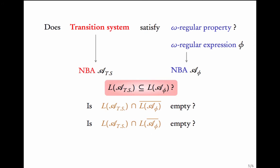Recall the modified product construction through which we can get a Büchi automaton representing the intersection of two automata. Given A and B, we construct a product such that the language of this product is the intersection of L(A) and L(B). So this question boils down to asking if the language of this modified product is empty or not. Therefore, the question of whether the transition system satisfies an omega-regular property is converted to checking emptiness of some Büchi automaton.